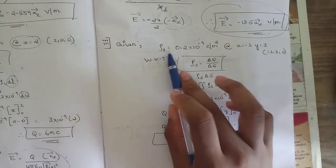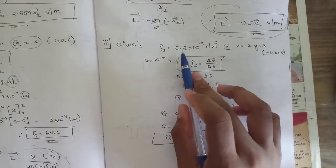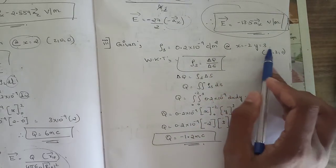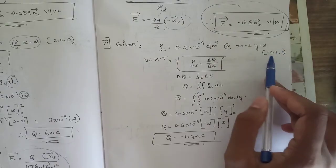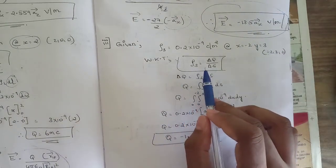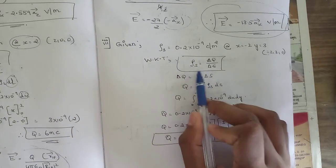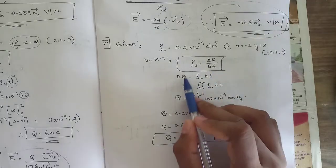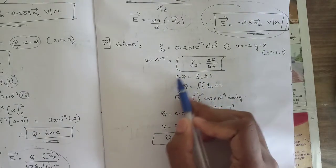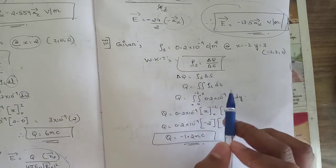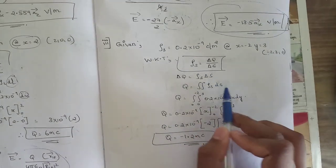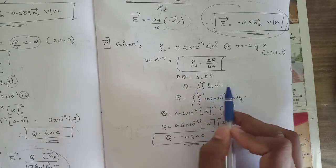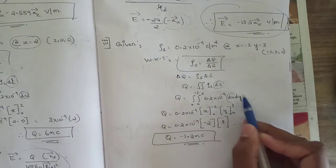For sub-question (c): surface charge density ρs equals 0.2 nanocoulombs per meter squared at (−2, 3, 0). From the definition ρs equals ΔQ/ΔS, Q equals the double integral of ρs dS, where dS equals dx dy. Taking 0.2 into 10⁻⁹ outside, integrating x from 0 to −2 and y from 0 to 3.